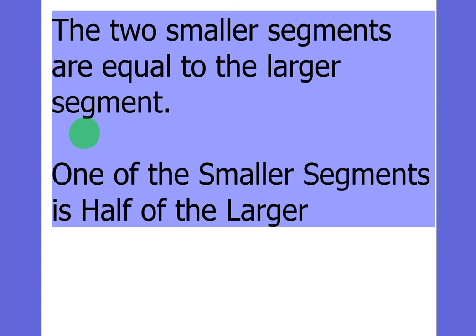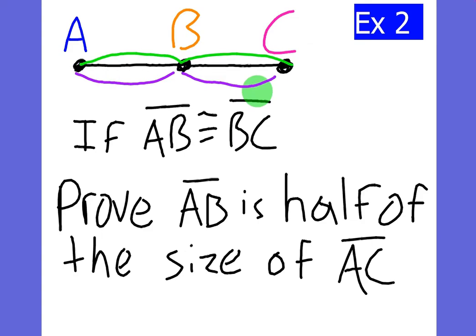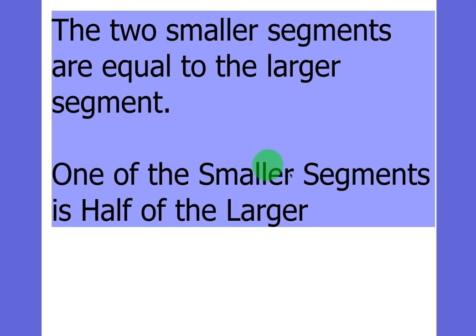Okay, so I'll write my first thought out, and it's the two smaller segments are equal to the larger segment. Okay? Right there. Now the second thing I noticed was the purple then must be half of the green, right? Pretty obvious, considering they're equal. That's the second thing I wrote. One of the smaller segments is half of the larger. It's a pretty simple short proof, and we're just going to fill in the rest of the table now.